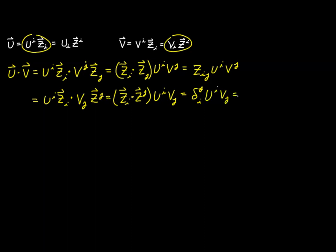This time, the dot product between the basis vectors produces a Kronecker delta δ^j_i. We use the Kronecker delta to absorb the j index, leaving us with the expression u^i v_i.